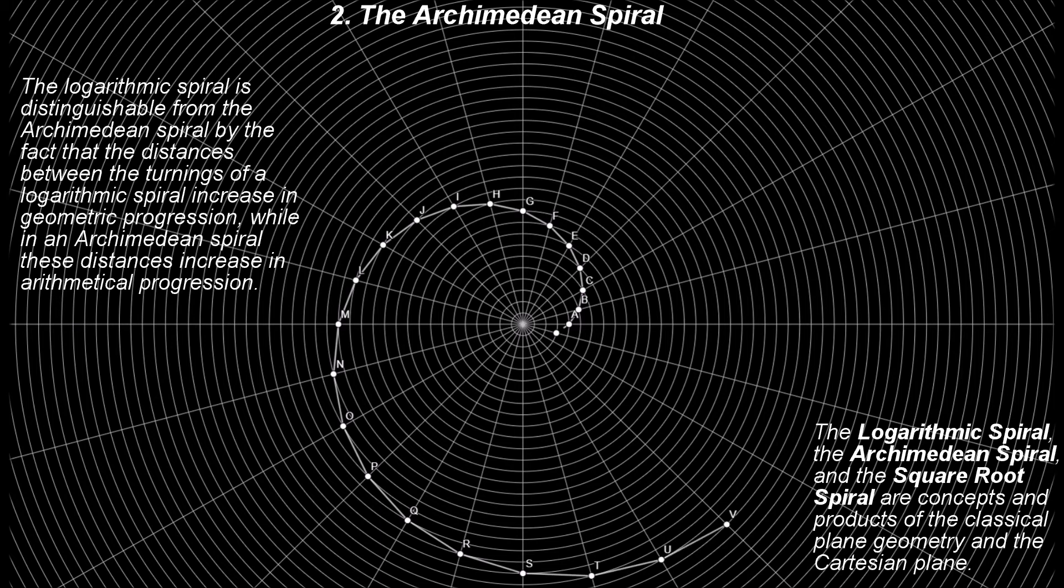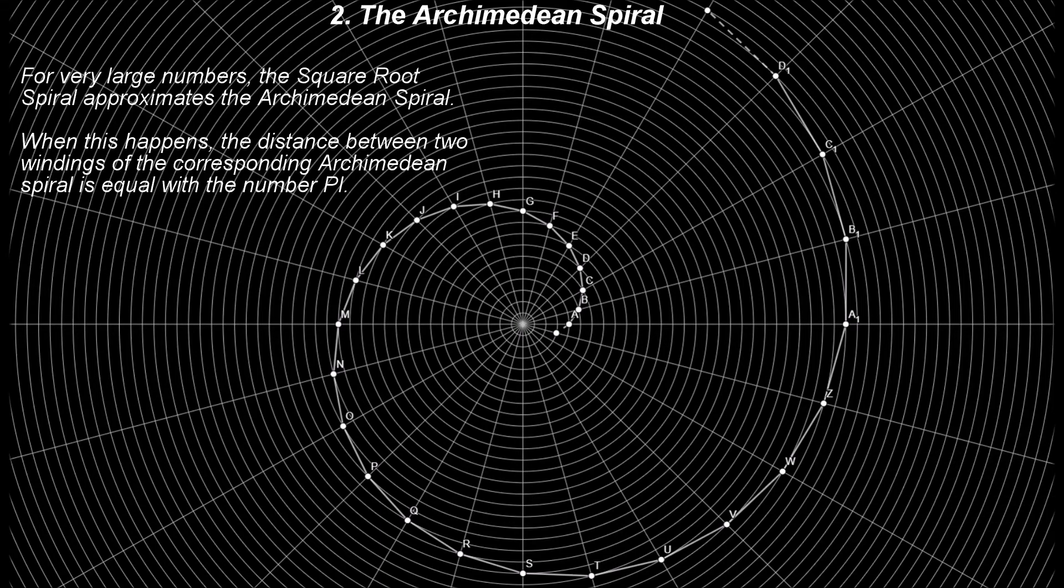The logarithmic spiral and the square root spiral are concepts and products of the classical plane geometry and the Cartesian plane. Let us mention few similarities among these three spirals.